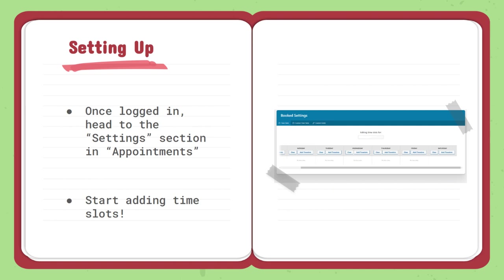Each time slot is 30 minutes long, so if you would like to tutor for more than that, make sure you add multiple single slots or you use the bulk function, which allows you to add more than 30 minutes per time slot. It is also important to note that these time slots are on a weekly basis, so if you set up time slots for Saturday and students book all of the classes, it would be every single week on a Saturday at 4 p.m.